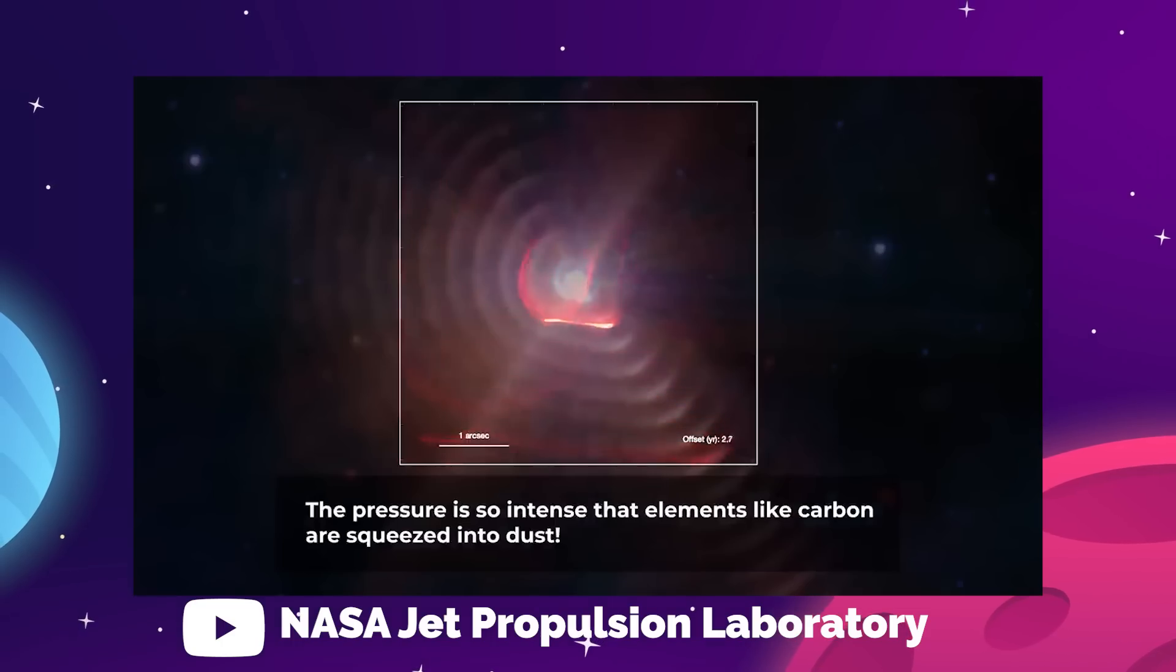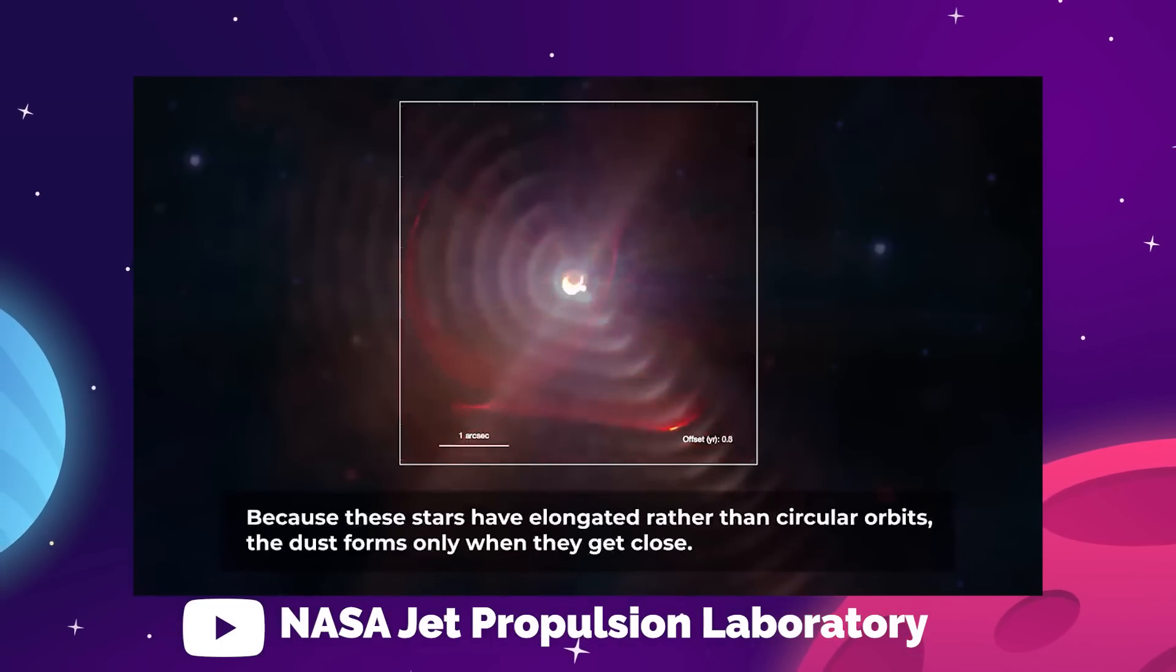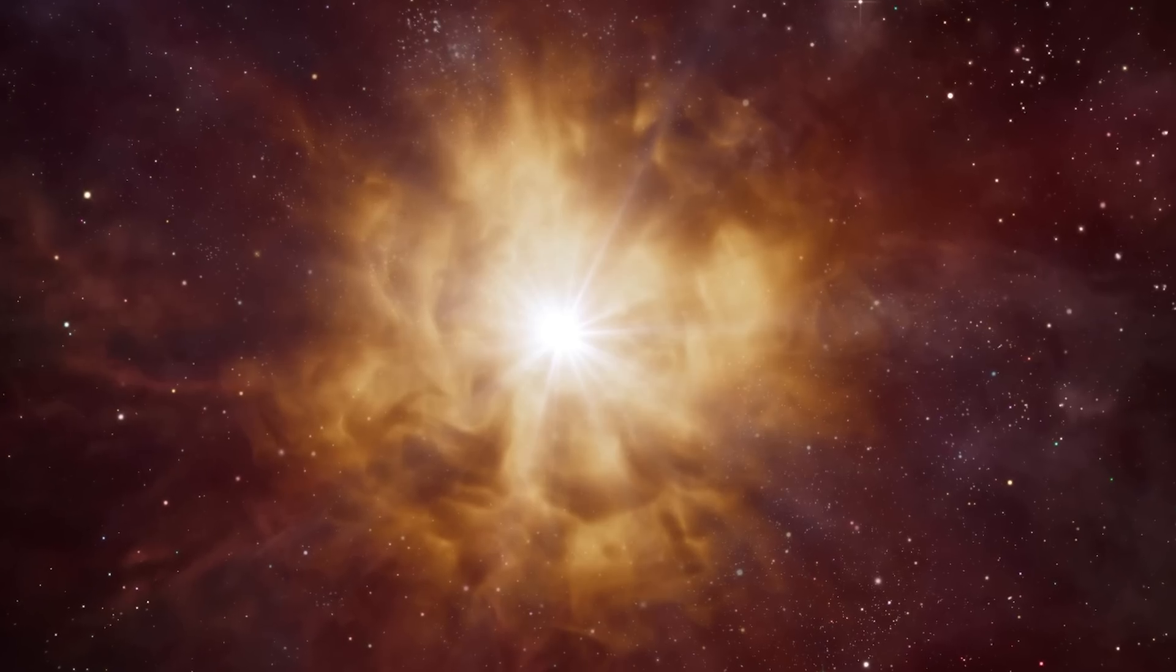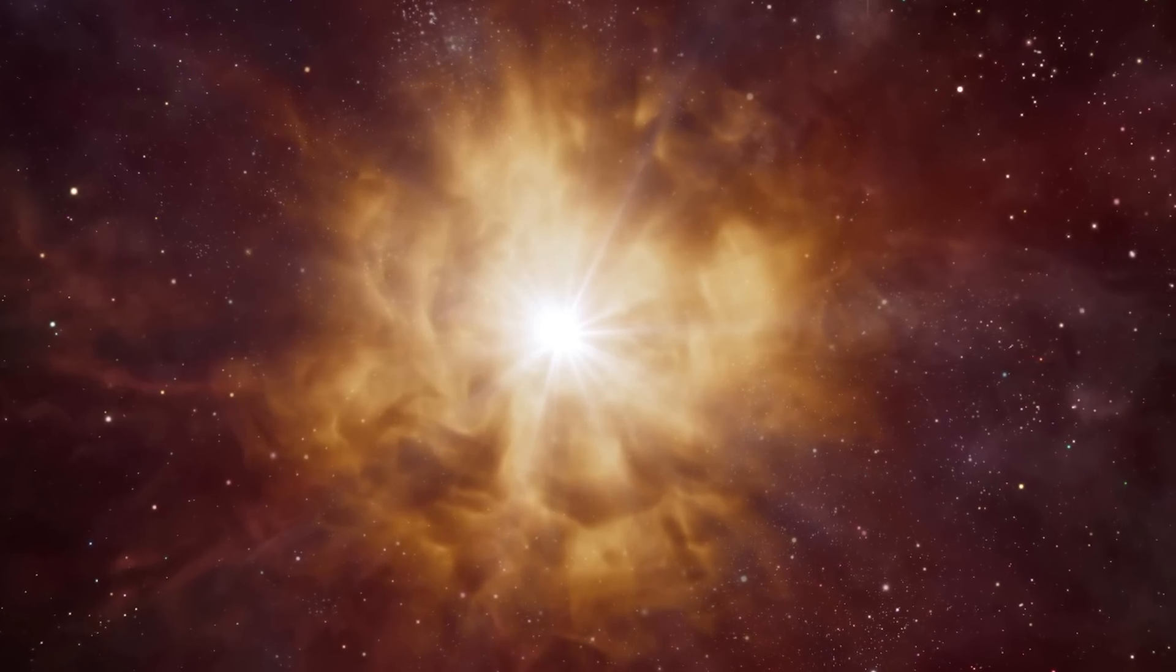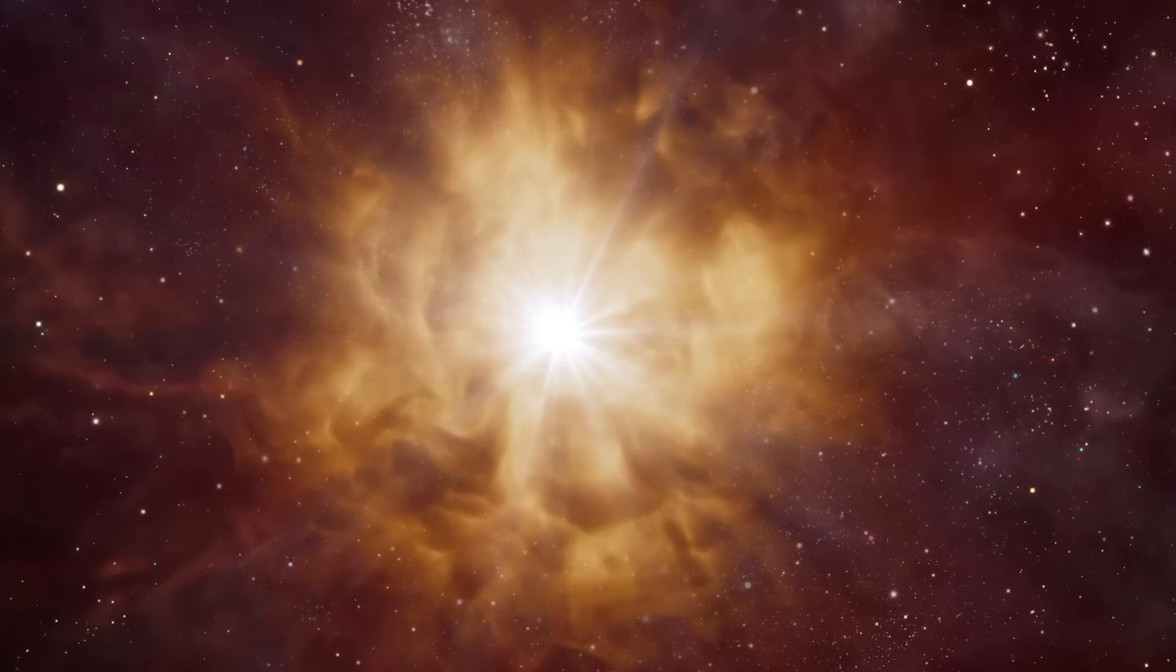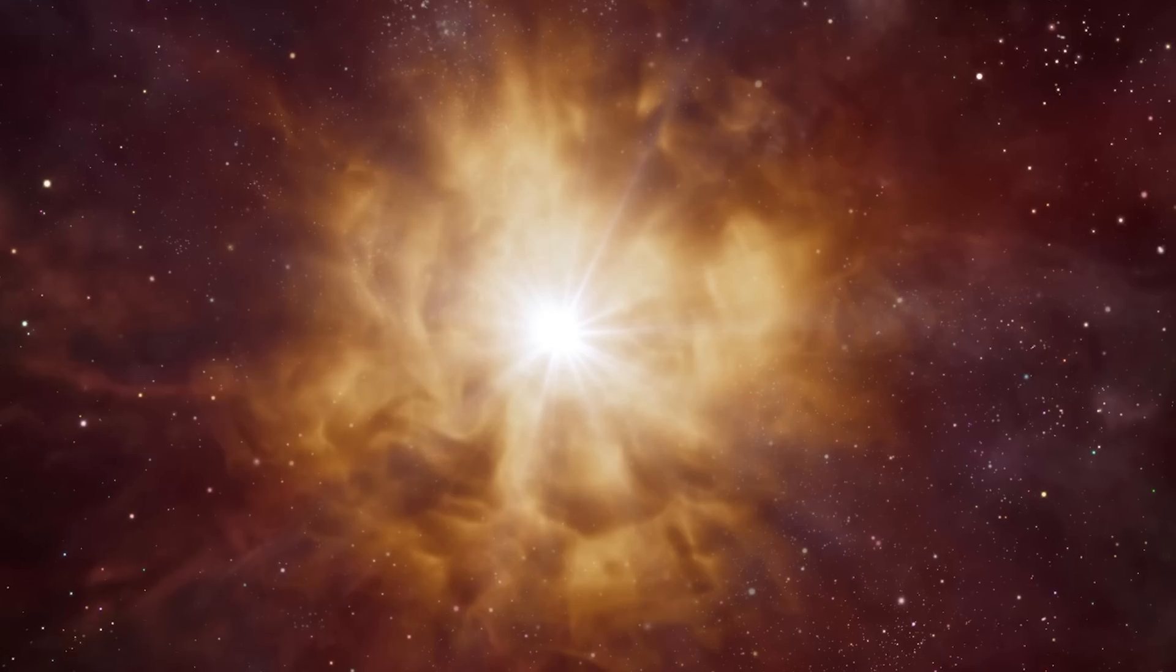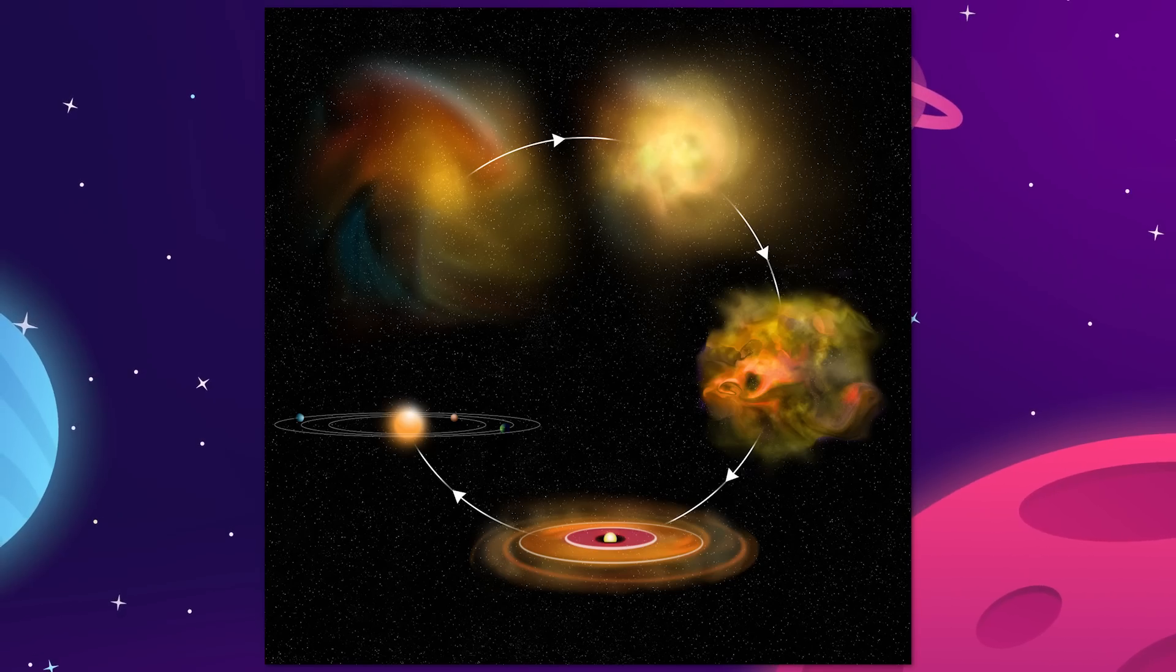Aside from looking gorgeous, this process of shedding dust is important for new star and planet formation. Wolf-Rayets are hydrogen-burning stars, and so when they die, they push out all the necessary ingredients for forming new stars and planets, like hydrogen and carbon.